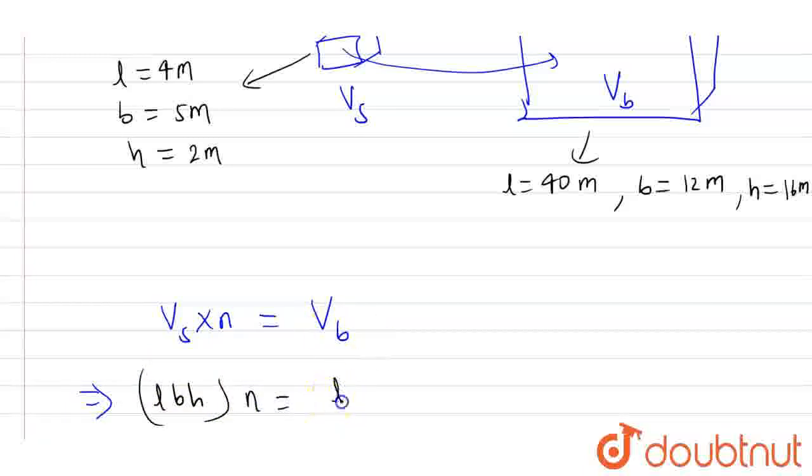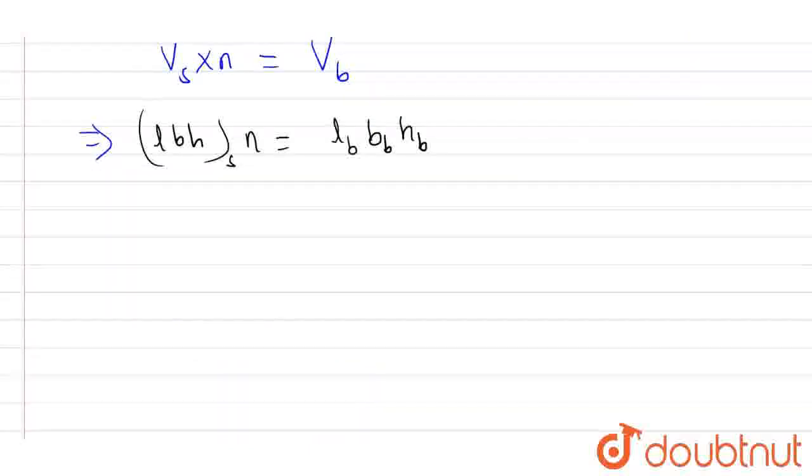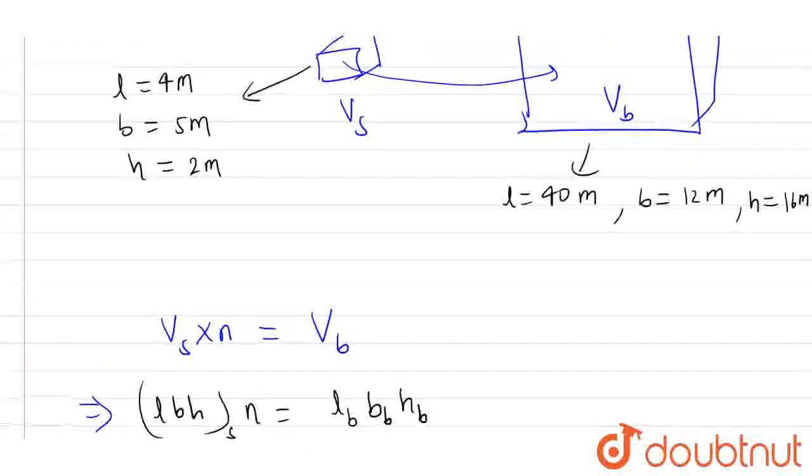And what is it? Big is it, Vb is Lb, Bb, and Hb. And this is for small. Okay? So what is it? 4, 5, 2.